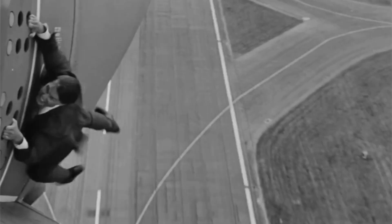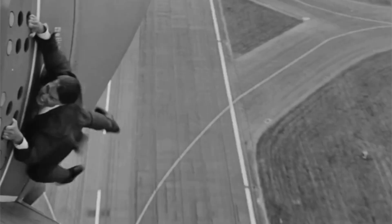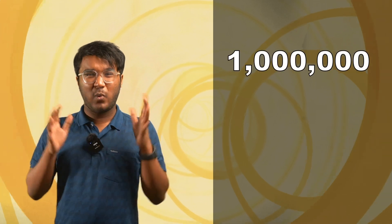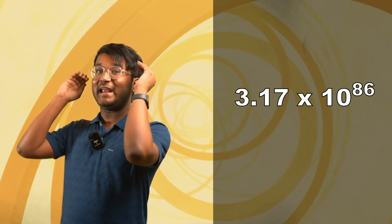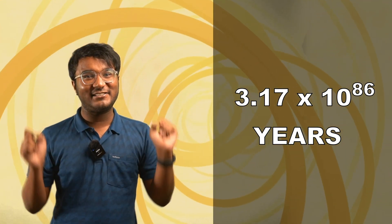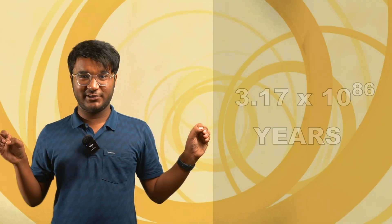Without the private key, it's impossible to decrypt the message. Imagine the case where the public key is 200 digits long. Assuming a modern computer could try 1 million combinations a second, it would take 3.17 multiplied by 10 to the power of 86 years — that is 317 followed by 84 zeros — to try every single combination. That would be an impossible feat for any computer to achieve, and similar parallels can be drawn with other encryption algorithms too. That's why they're virtually impossible to crack.